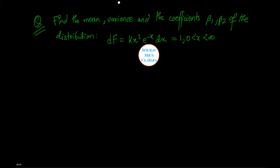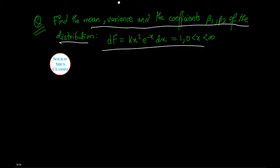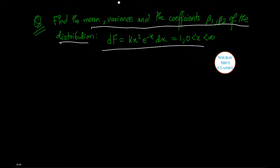We need to find the mean, variance, and the coefficients beta 1 and beta 2 of the distribution given as df equals kx squared e to the power minus x dx, which equals 1, such that x lies between 0 to infinity.